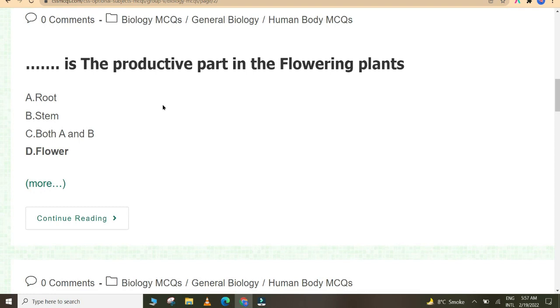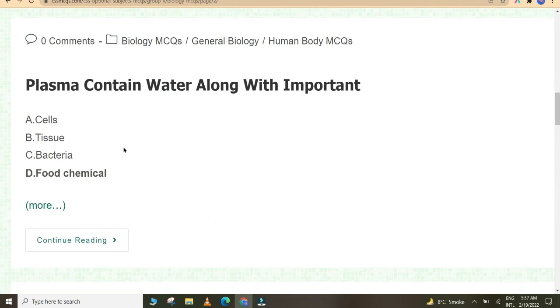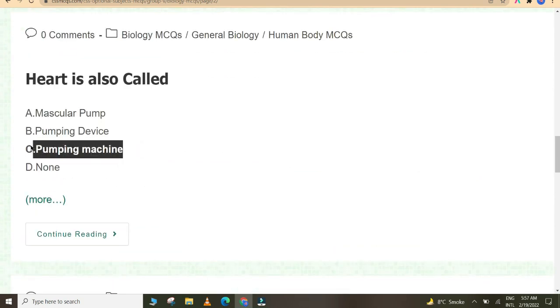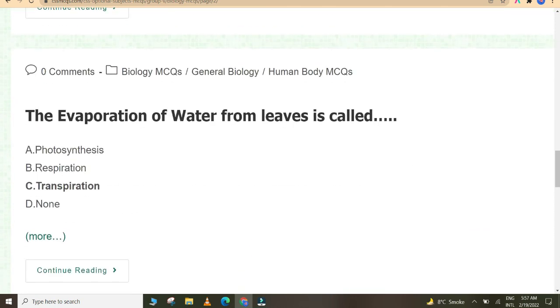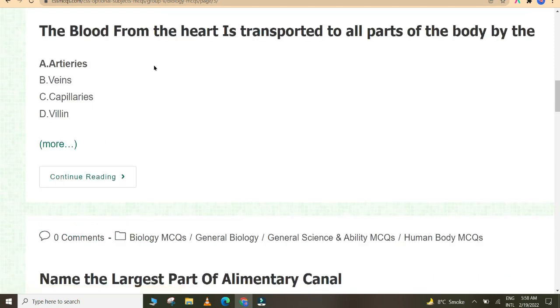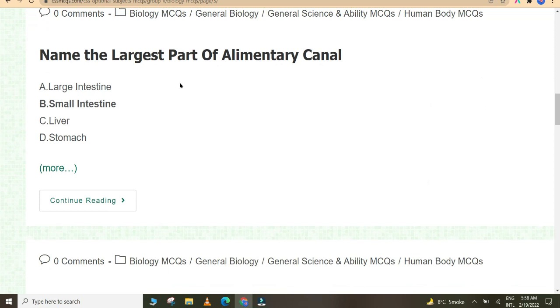Some plants have seeds with hooks for dispersal. For fertilization, the egg in carpel is known as ovule. Flower is the reproductive part in flowering plants. Plasma contains water along with important food chemicals. Heart is also called pumping machine. The evaporation of water from leaves is called transpiration.